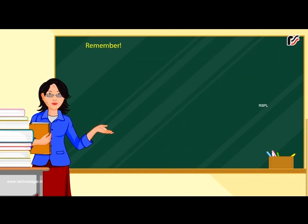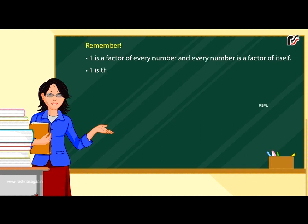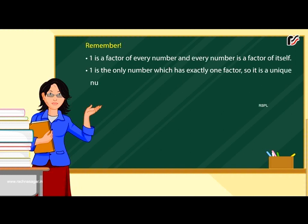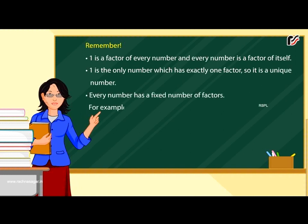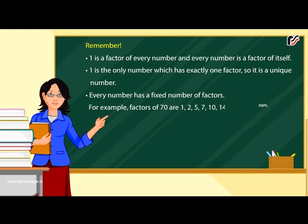Remember, 1 is a factor of every number and every number is a factor of itself. 1 is the only number which has exactly one factor, so it is a unique number. Every number has a fixed number of factors. For example, factors of 70 are 1, 2, 5, 7, 10, 14, 35 and 70.